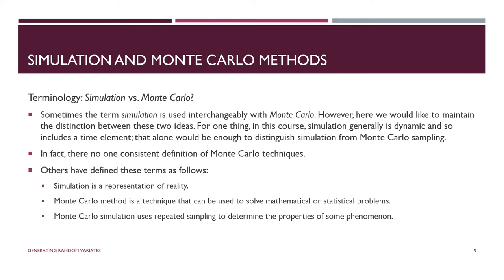Monte Carlo simulation is a distribution sampling approach — it uses repeated sampling from the distribution of interest to determine properties of some phenomenon, getting parameters and estimates of the distribution. Simulation is a broader technique, and especially discrete event simulation involves a time element, which is definitely distinguished from Monte Carlo sampling, which is a cross-section at a moment in time — the distribution doesn't change.